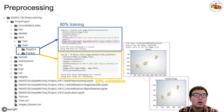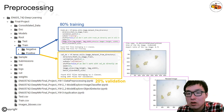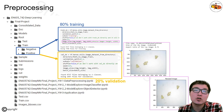We utilized TensorFlow Keras utility image_data_from_directory, loading from the folder with an 80% training and 20% validation split. During the process, we also resize the images to 512 by 512 pixels, because the raw images could have different sizes and we need to feed the neural network with a fixed dimension.